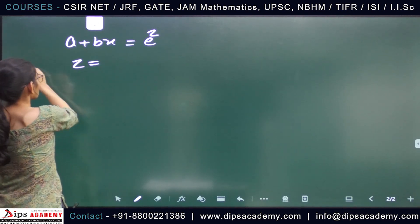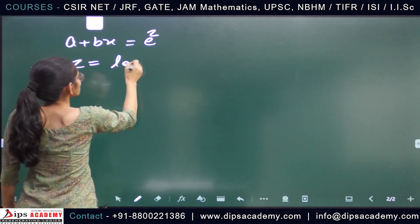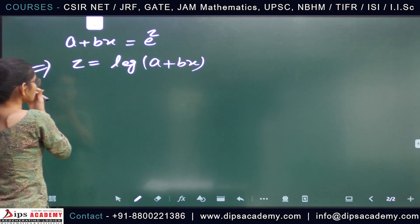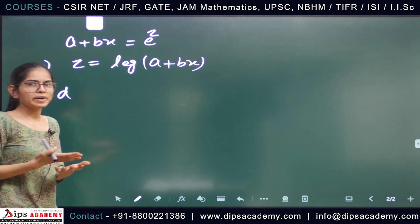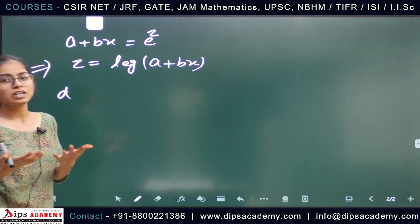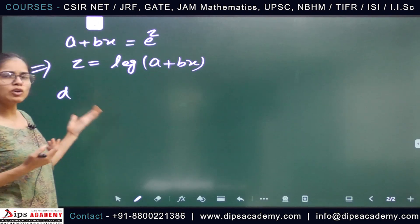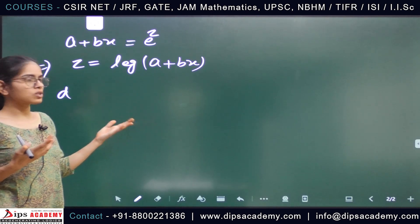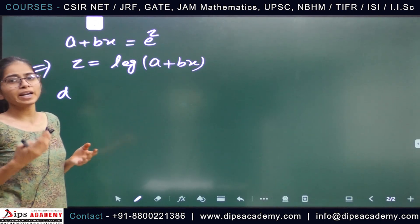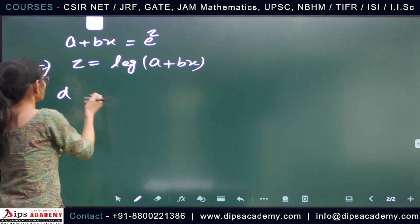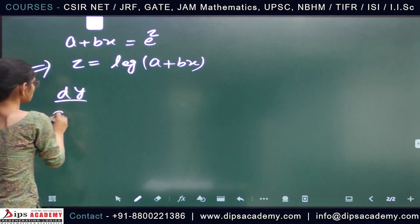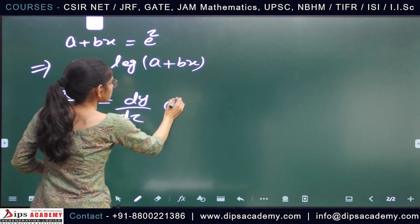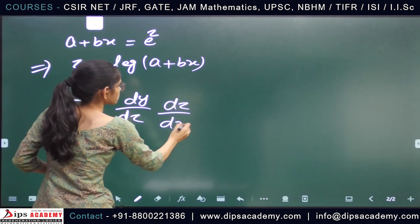With the substitution a+bx = eᶻ, our z = log(a+bx). We find dy/dx by the chain rule: dy/dx = dy/dz · dz/dx. Since dz/dx = b/(a+bx), we get dy/dx = b · dy/dz. Let us denote dy/dz as capital D.